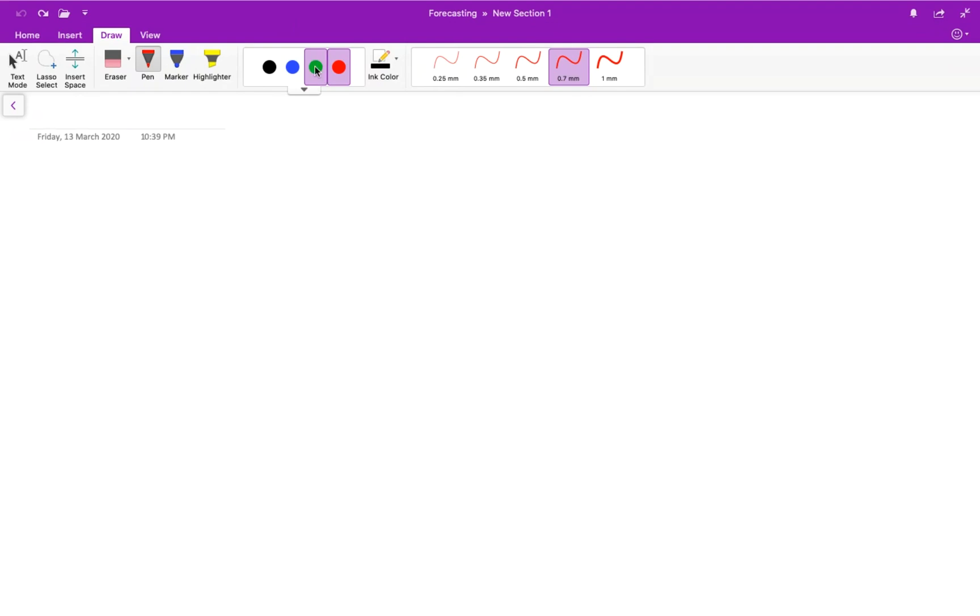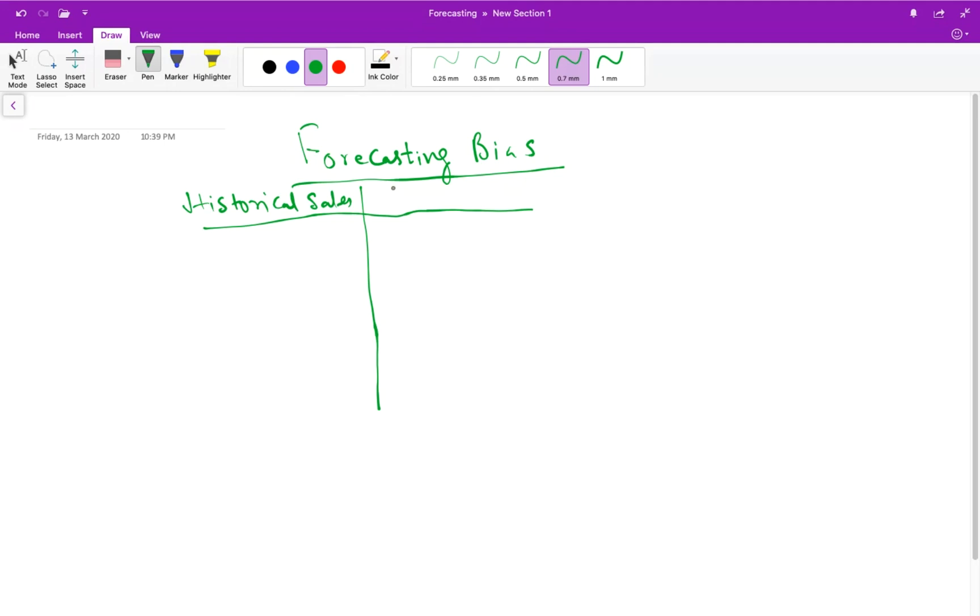Let me write down what is this forecasting bias. I will give you a small presentation on what is forecasting bias. I take two variables here. The first variable is the historical sales. The second variable is the forecast which is done based on a forecast model or mathematical model.